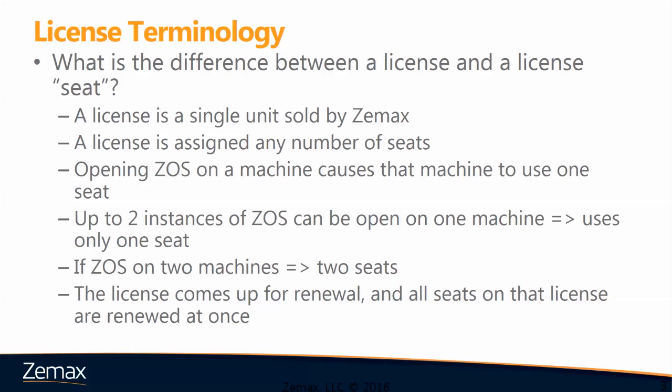First, we need to cover the difference between a license and a license seat. When we talk about a license, this is a single unit that's sold by ZMAX. A license can have any number of assigned seats within it, and when you open Optics Studio on a machine, that machine uses one license seat.